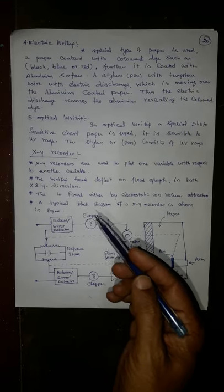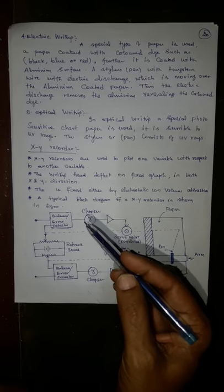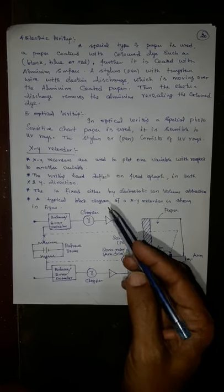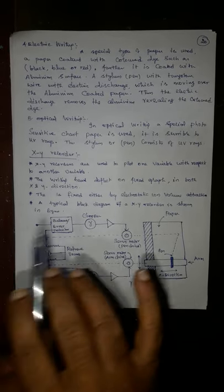Last one is optical writing. In optical writing, a special photosensitive chalk paper is used. It is sensitive to UV rays, ultraviolet rays. The stylus or pen consists of UV rays. That's all.